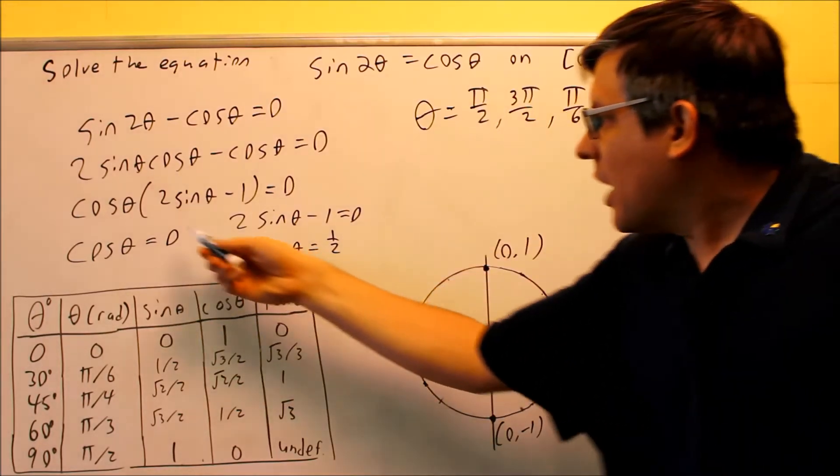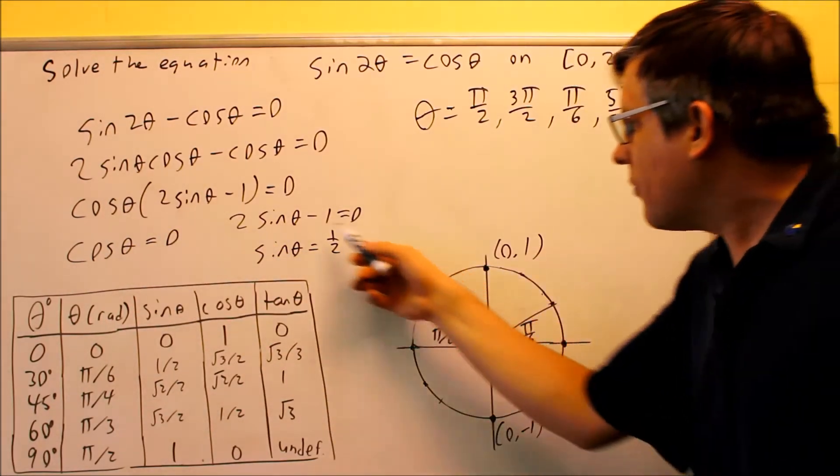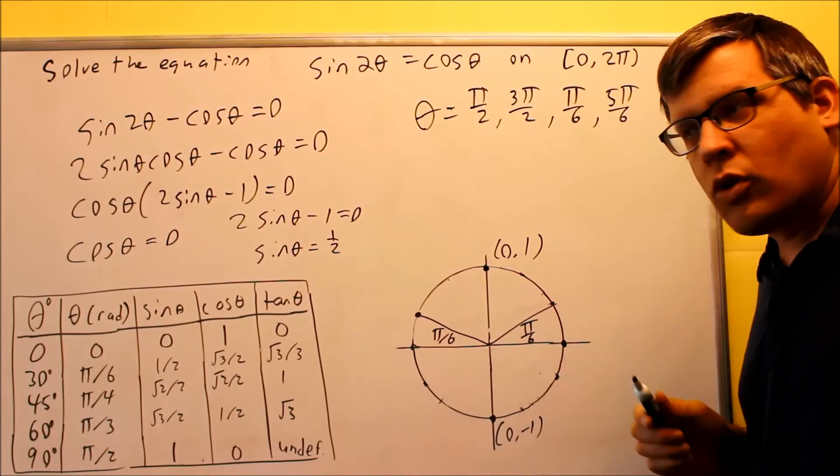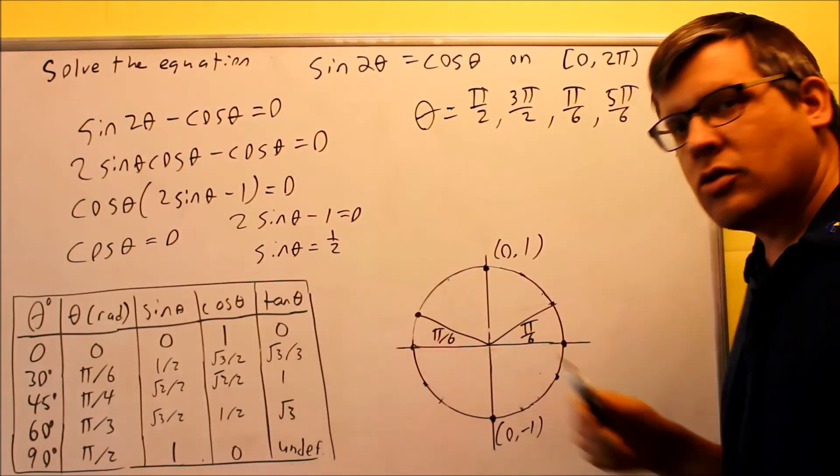So the first two came from this equation, cosine theta equals 0. The second two answers came from solving this equation, sine theta equals 1 half. So both of those individually, I had to use the unit circle and also the table.